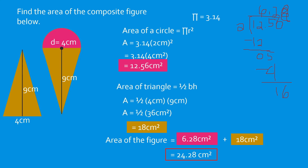Take note, we needed only half of the circle, so the half-circle area is 6.28 square centimeters.